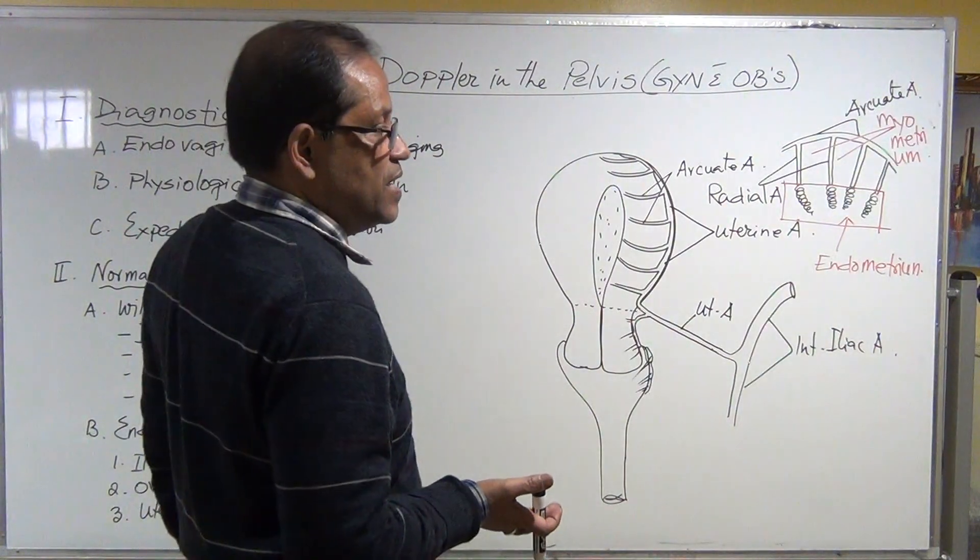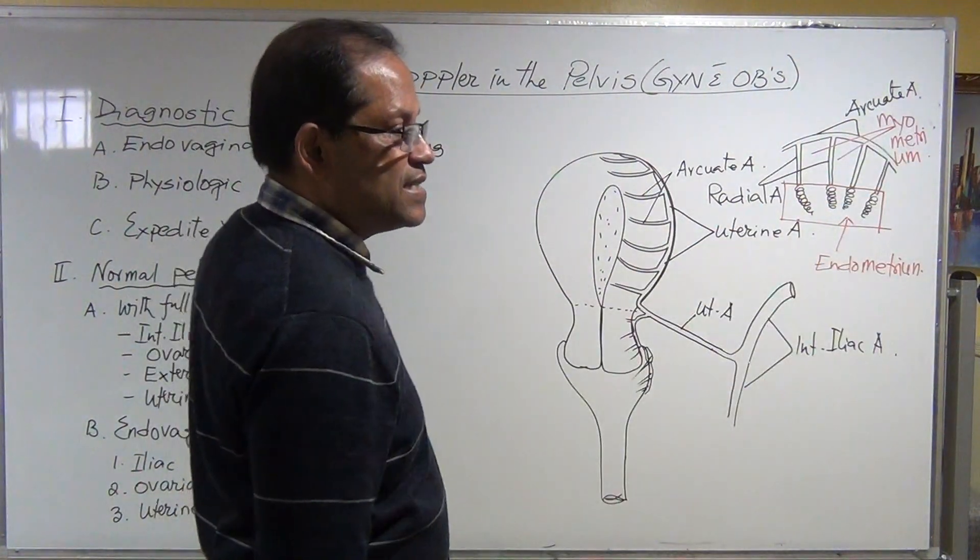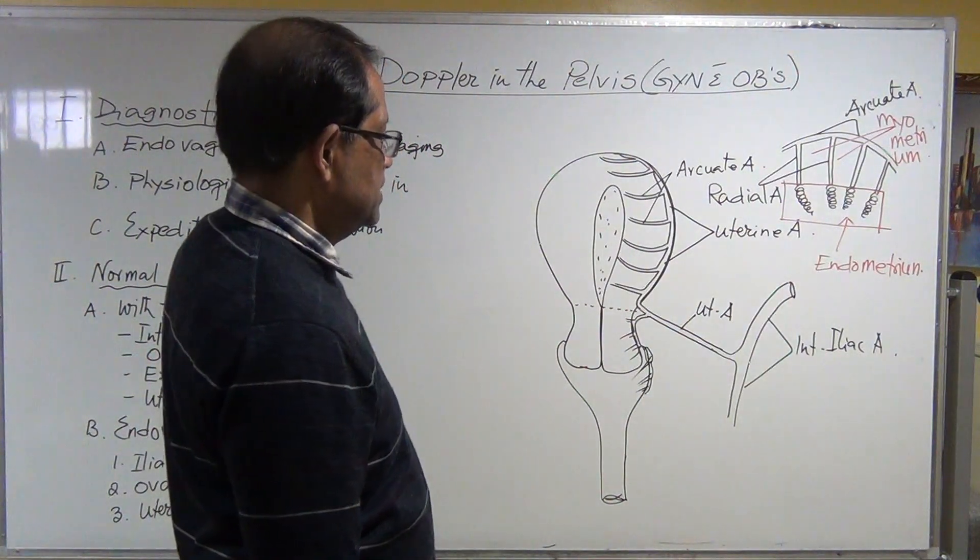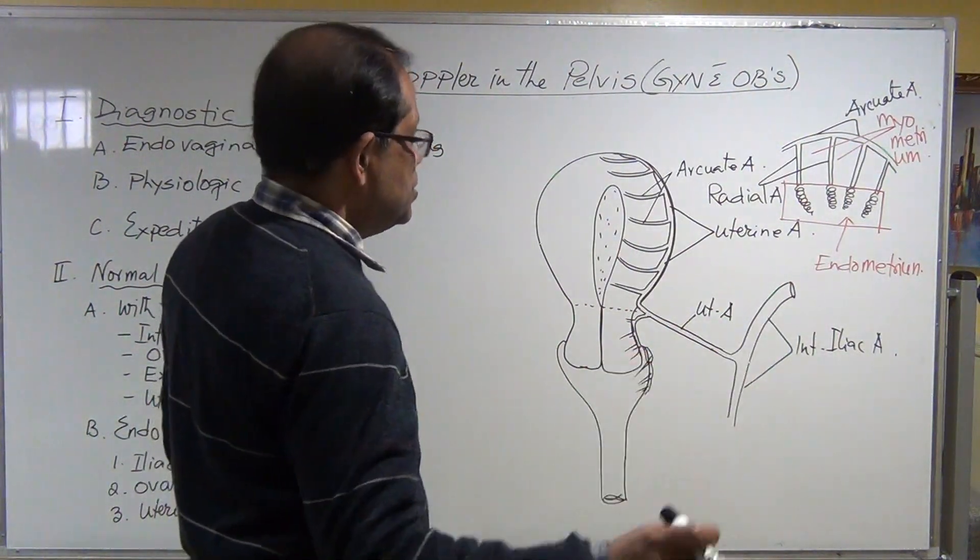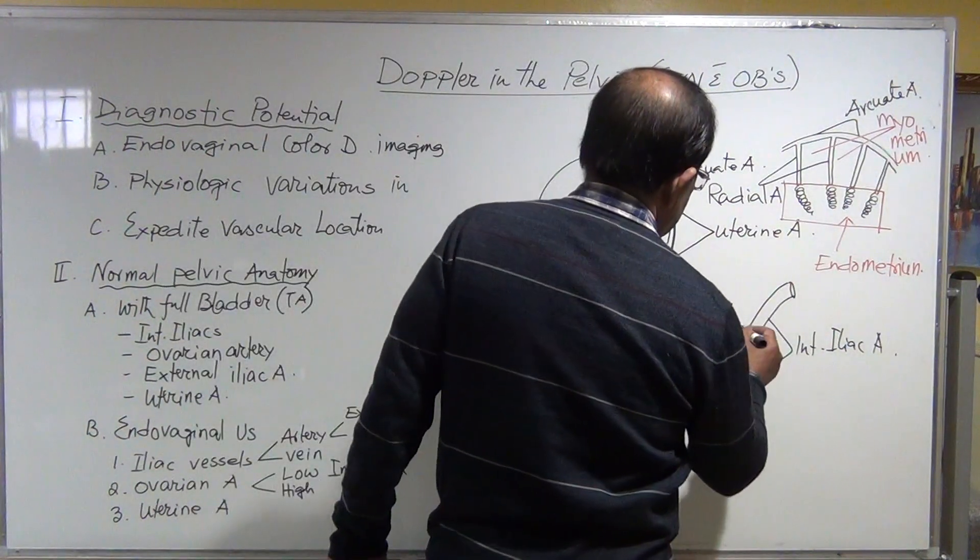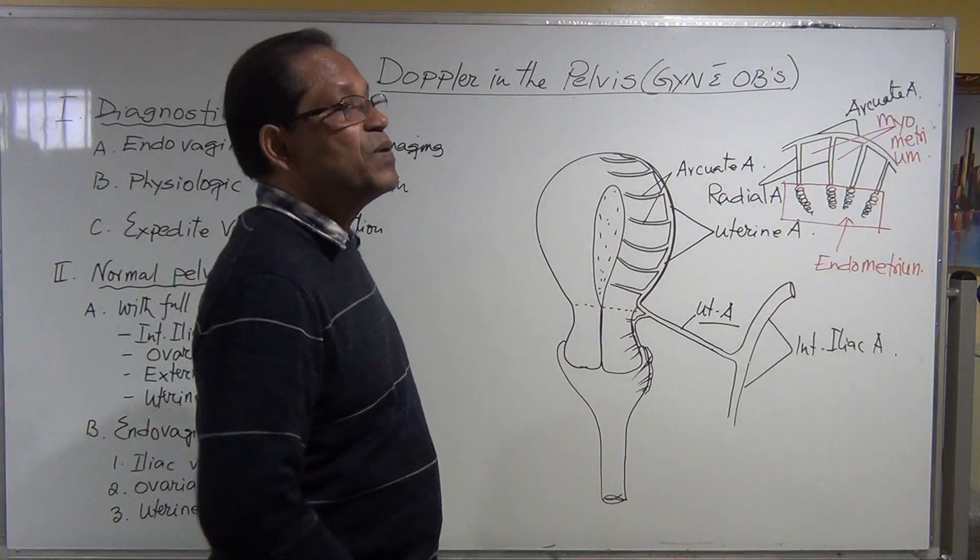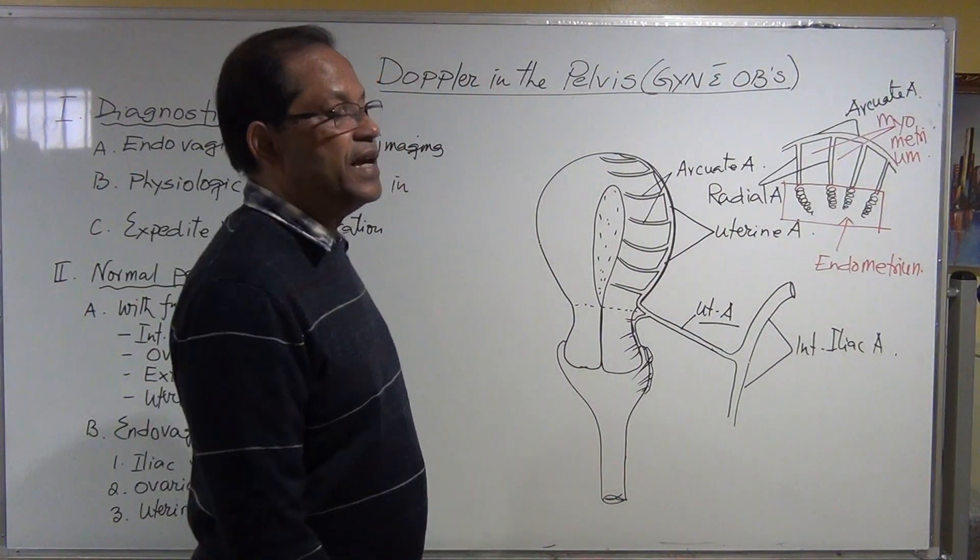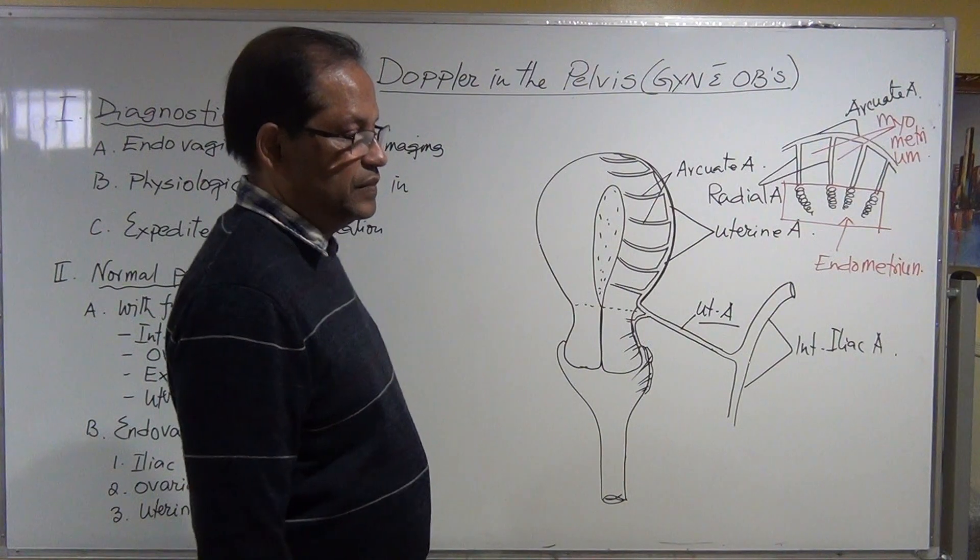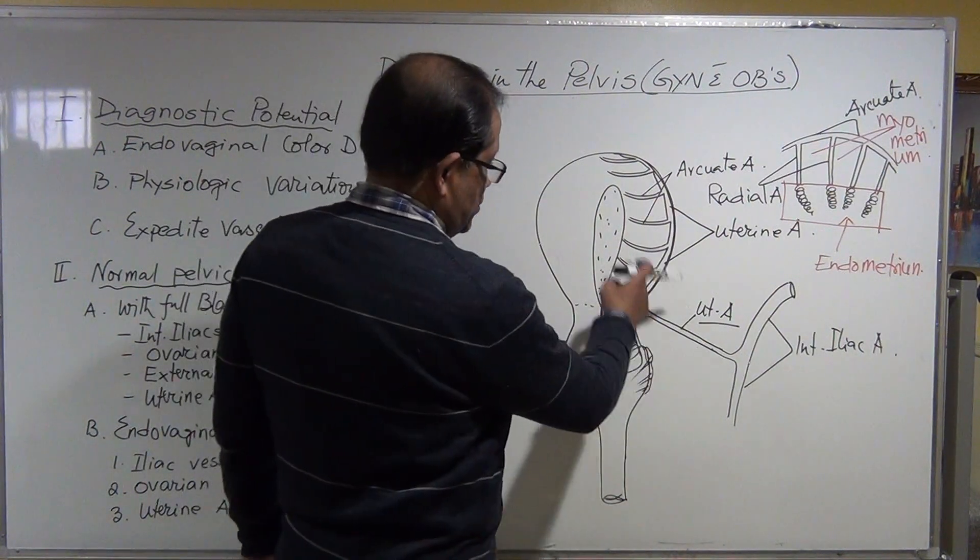There will be continuous forward flow, high forward flow during the diastole, because the demand is more and the resistance is less. We have to take the history from the patient. Uterine artery before entering into the uterus we can see in the pelvic floor, we can see it entering into the uterus.